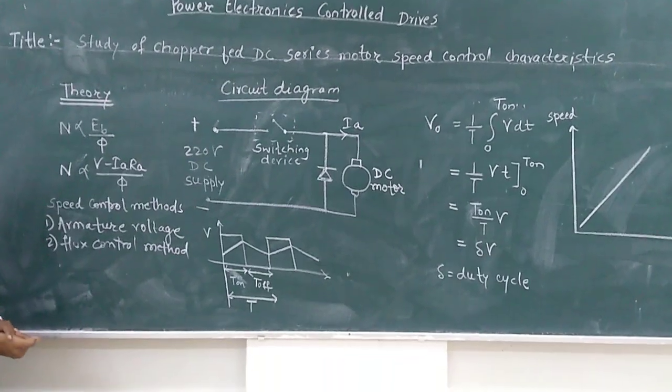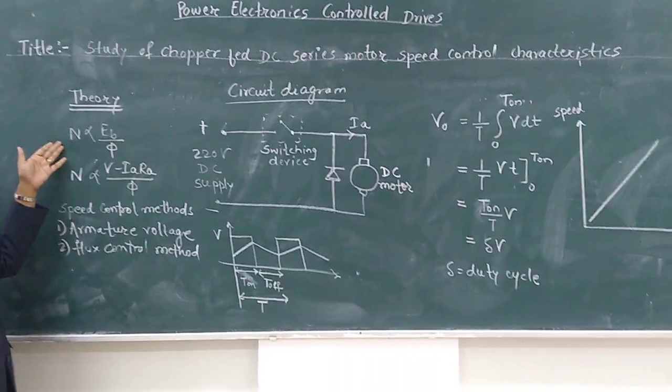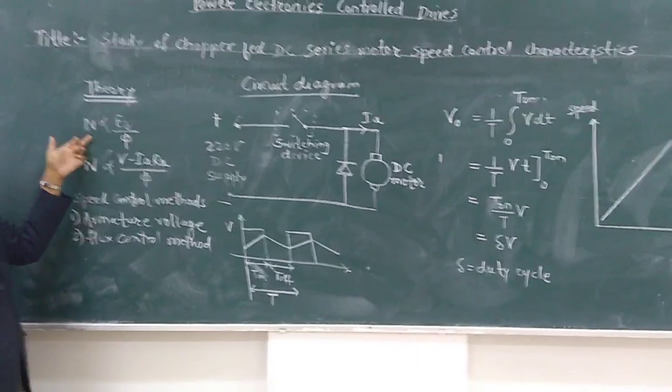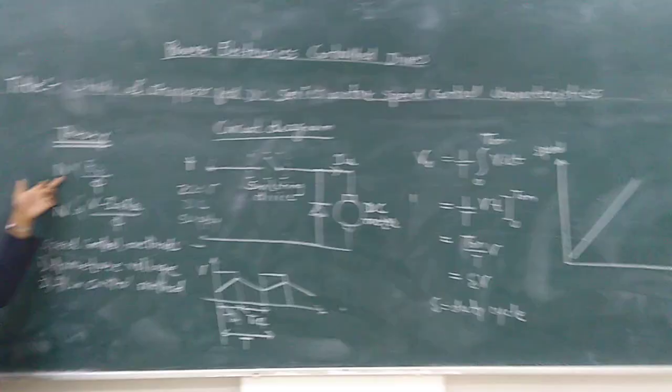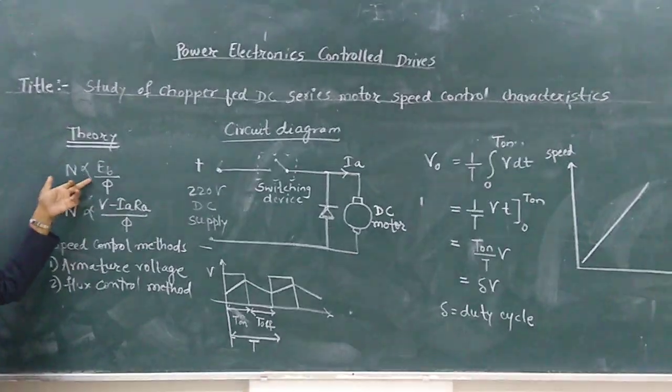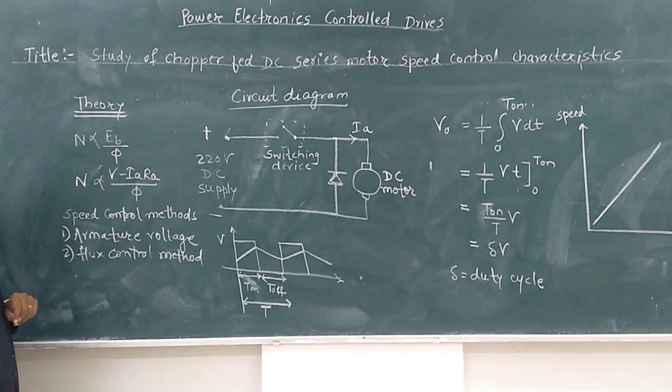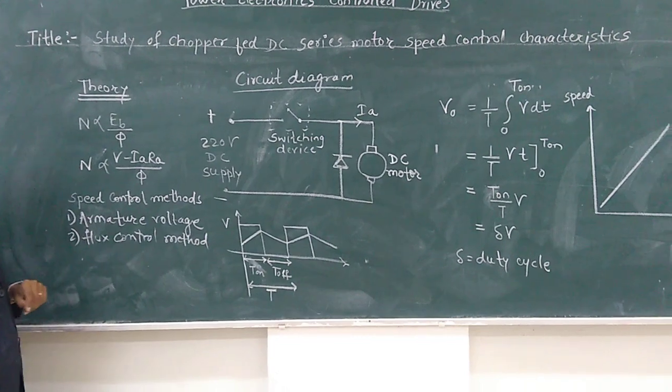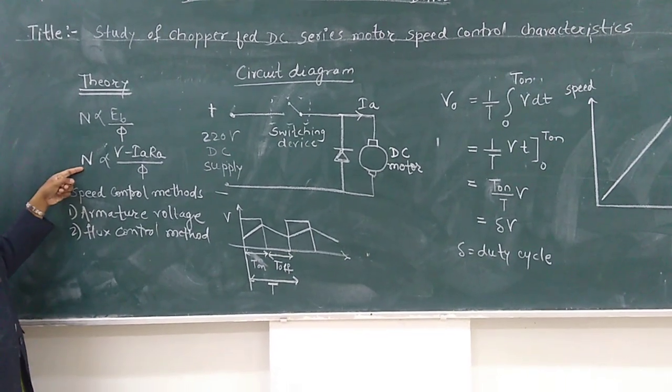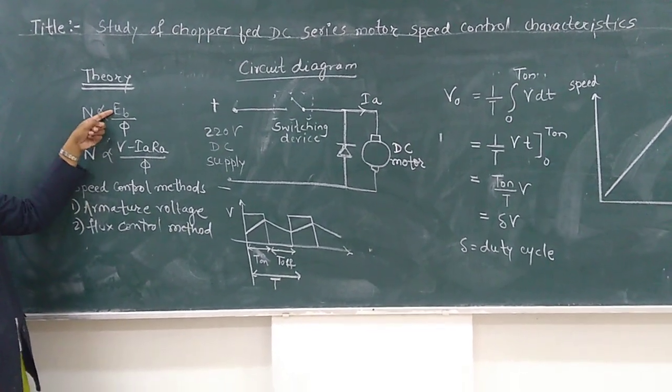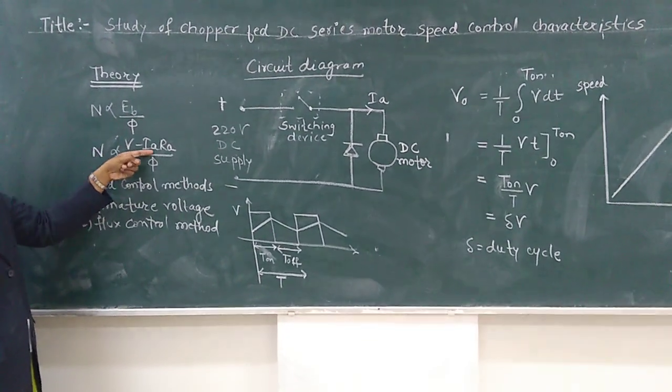So let us see the theory of the experiment. The speed of the DC motor is given by the equation: speed is directly proportional to Eb over φ, where Eb is the back EMF of the motor and φ is the flux of the motor.